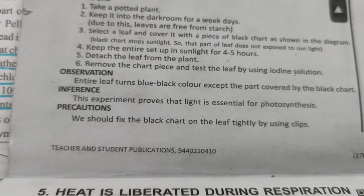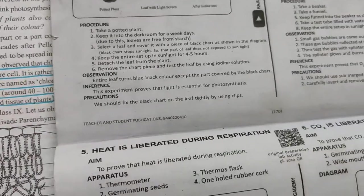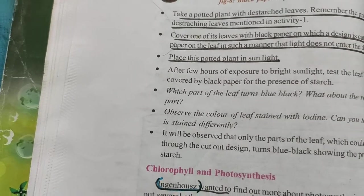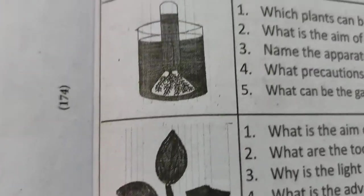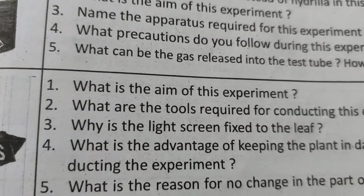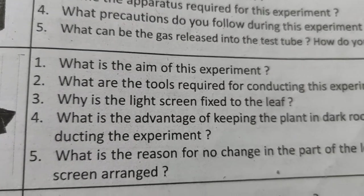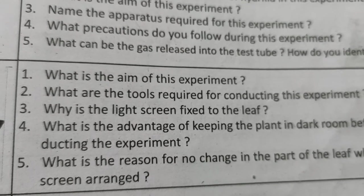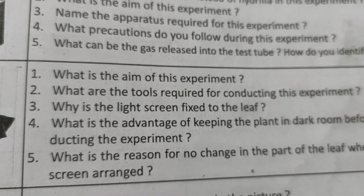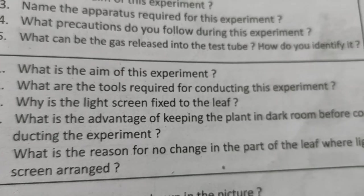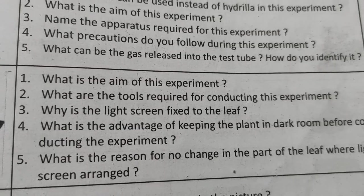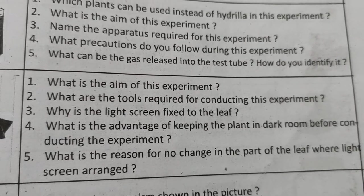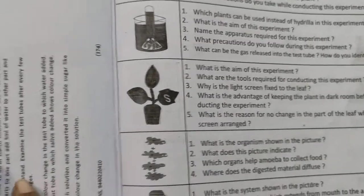Precaution: Fix the black chart to the leaf tightly by clipping it properly — if it is loose, light may enter the covered area. Possible questions: What is the aim of this experiment? What tools are required? Why is the light screen fixed to the leaf? What is the advantage of keeping the plant in a dark room before conducting the experiment? What is the reason for no change in the part of the leaf where the light screen was arranged?